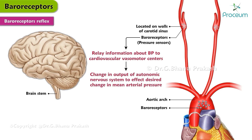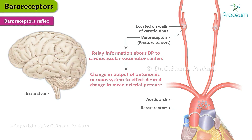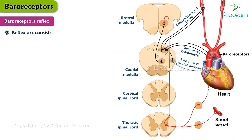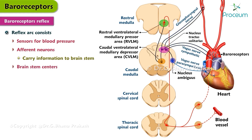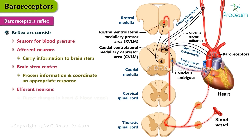The vasomotor centers in turn coordinate a change in output of the autonomic nervous system to affect the desired change in mean arterial pressure. Thus, the reflex arc consists of sensors for blood pressure, afferent neurons which carry the information to the brainstem, brainstem centers which process the information and coordinate an appropriate response, and efferent neurons which direct changes in the heart and blood vessels.